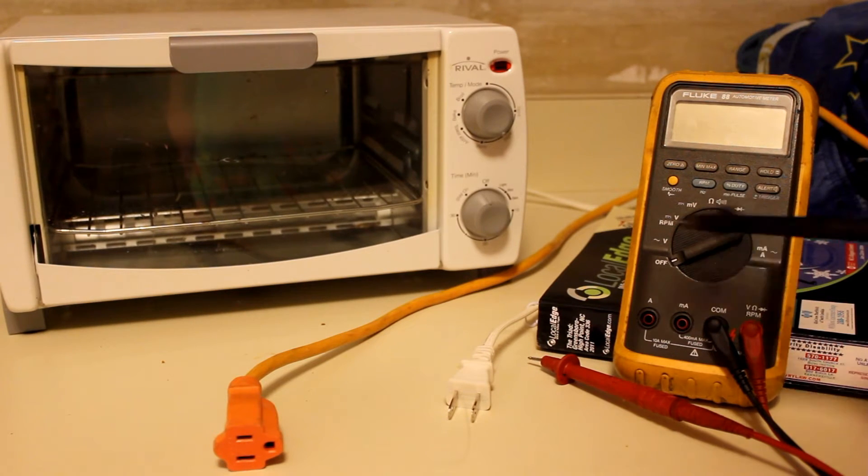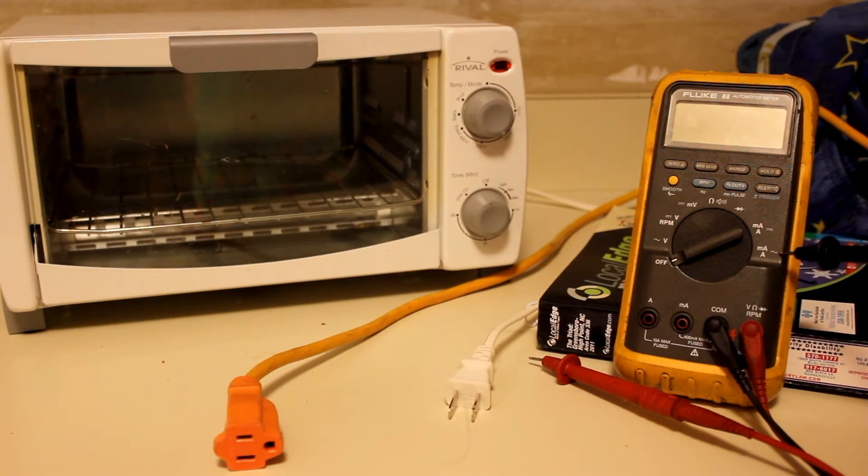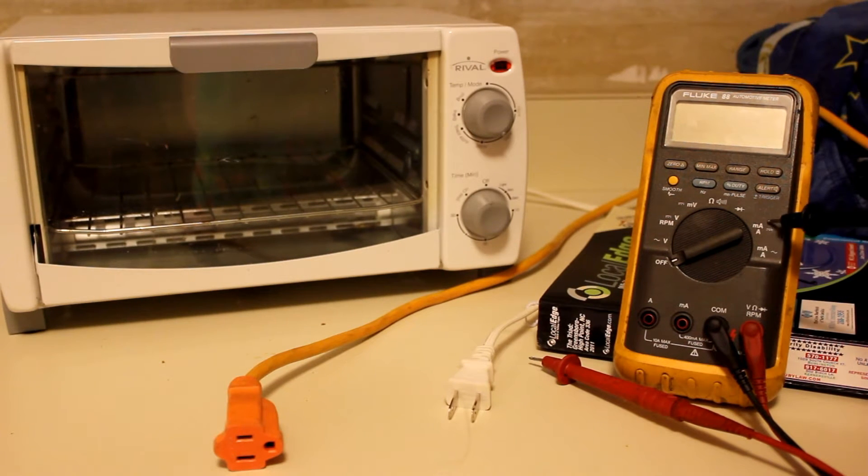Then you have this little horseshoe looking thing, and it's going to do resistance. And then you have the A with the squiggly and the straight and the dashed lines—that's amps for AC and then direct volts.